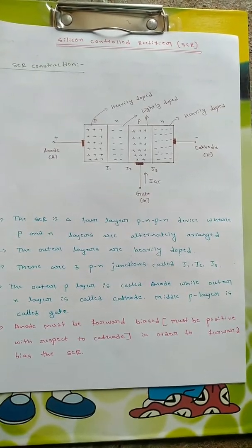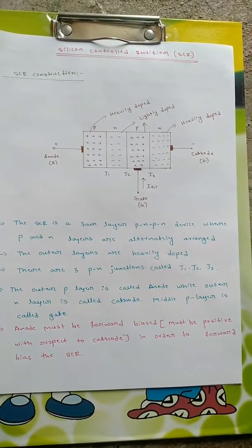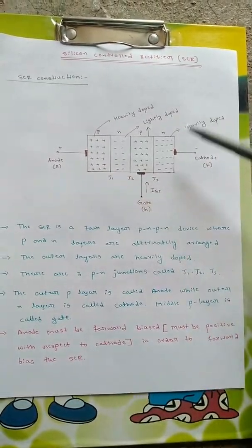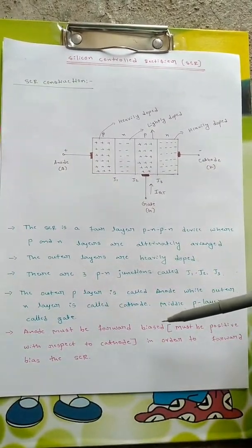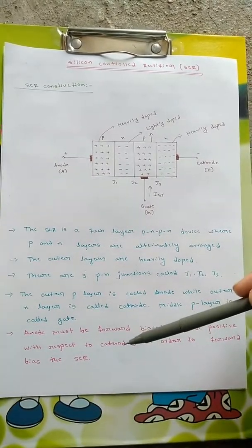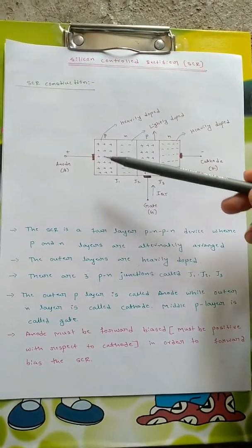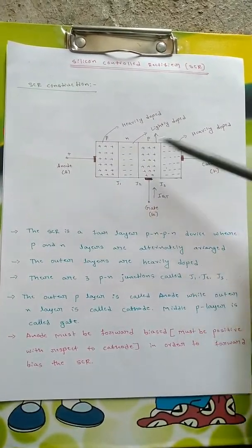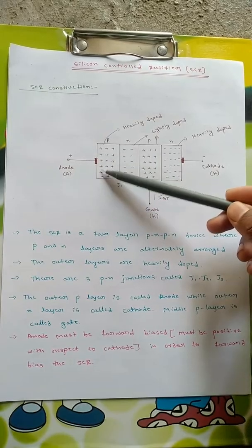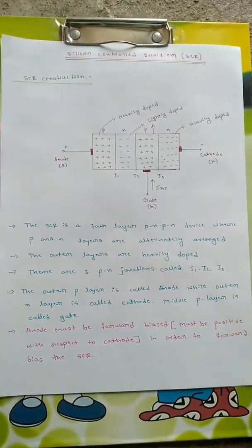The anode must be forward biased or must be positive with respect to cathode in order to forward bias the SCR. The anode should be positive with respect to the cathode, then only the whole silicon controlled rectifier will be forward biased.